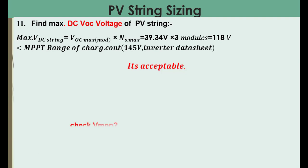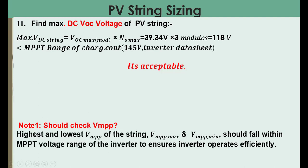It is very important to check the V_MPP range carefully to ensure that the highest and lowest values of V_MPP for the string always fall within the MPPT voltage range of the inverter. This ensures the inverter operates efficiently, avoiding damage and avoiding operation at less than peak efficiency.